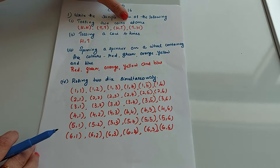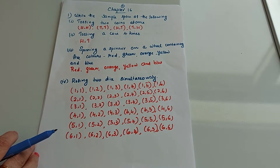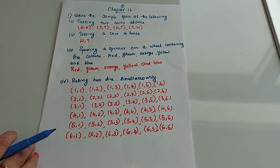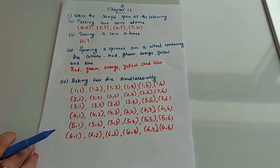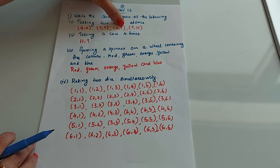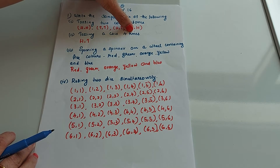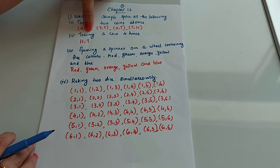Here the experiment is tossing two coins at once. When we toss one coin, the outcomes are head and tail. When tossing two coins at once, there may be two heads, two tails, first tail and second head, or first head and second tail. So our sample space is: head-head, tail-tail, head-tail, and tail-head.